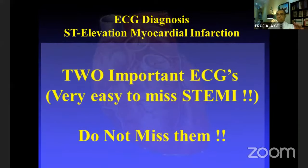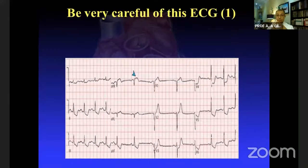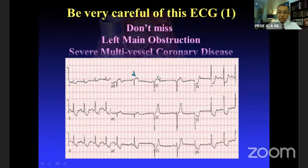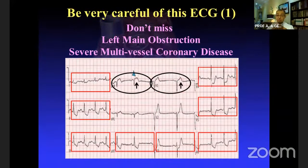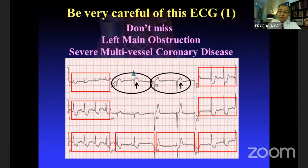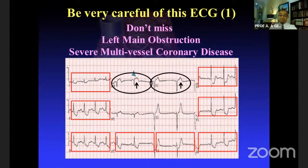Please don't miss these two ECGs, especially younger fellows and medical students. The first: there may not be impressive ST elevation — just a little in AVR and V1 — but there is massive widespread ST depression in almost all other leads. The guidelines say ST depression in eight or more leads quite often indicates left main serious obstruction or severe multi-vessel disease. Do not miss this ECG.